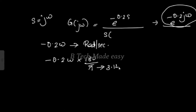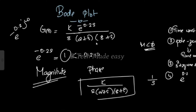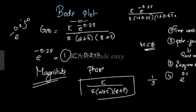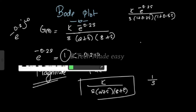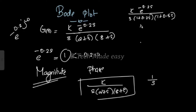Here π = 3.14. We are discussing the Bode plot. The magnitude plot does not change due to the delay term. For the phase plot, the angle contribution of e^(−0.2jω) is −0.2ω radians. Converting: −0.2ω × (180/π). K = 1, so the angle of 1/s is −90 degrees.